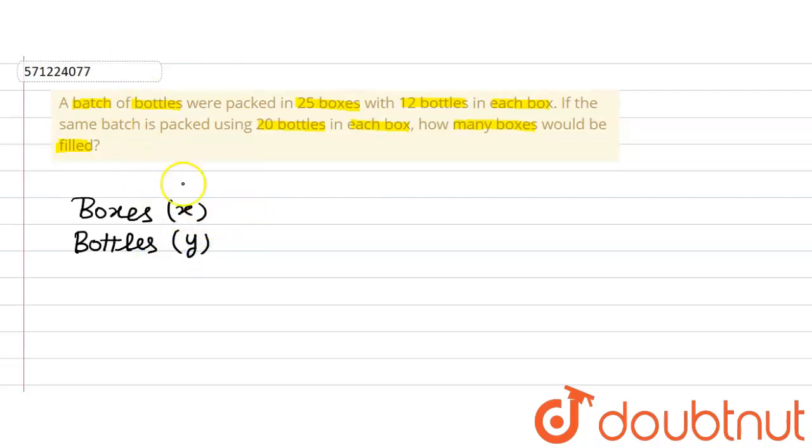Now we are given in the first case that there are 25 boxes and there are 12 bottles in each box. In the second case there are 20 bottles in each box and we are supposed to find out the number of boxes that will be required.